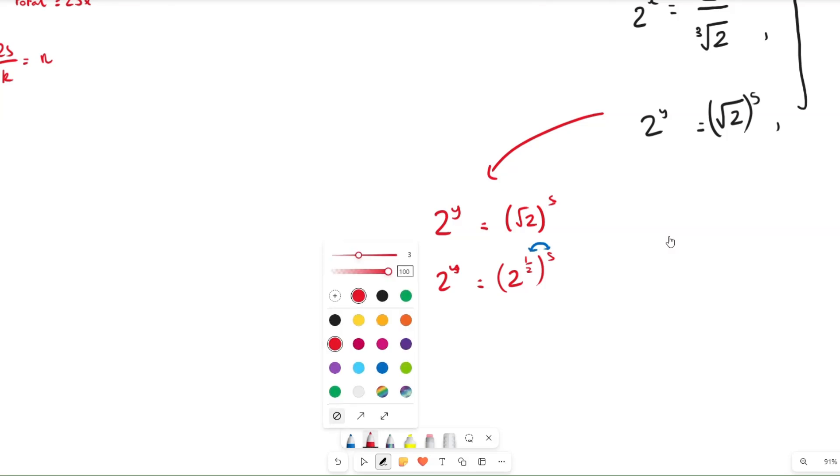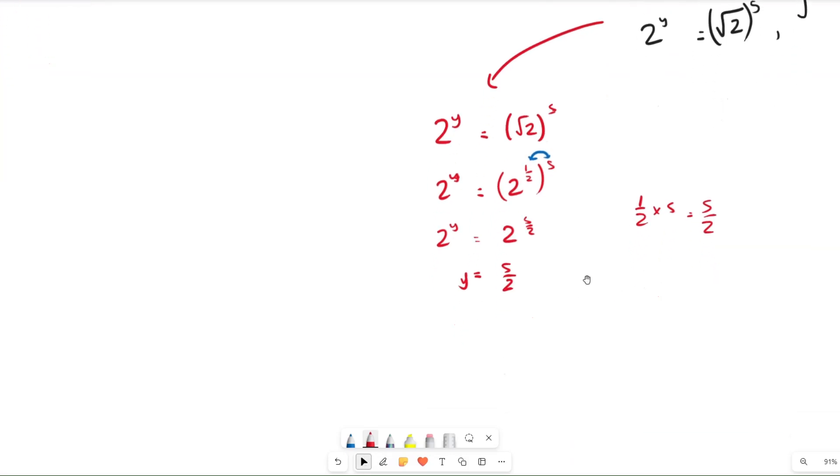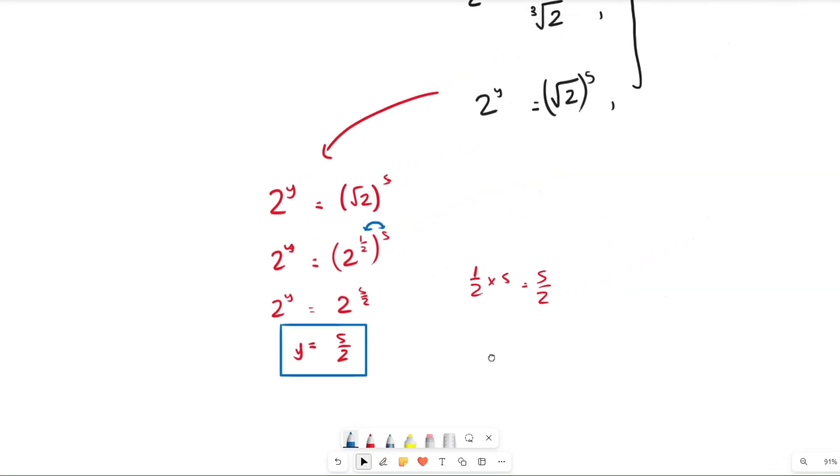Don't add them, people get confused all the time, but we're not going to today. So 2 to the power of y equals 2 to the power of what is a half times 5, that's just going to equal 5 over 2. And since both the bases are the same, we can equate the indices. Y equals 5 over 2, and then that is literally the value of y, but that's not what we're looking for. We're looking for n.